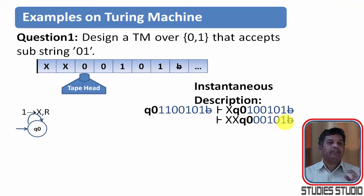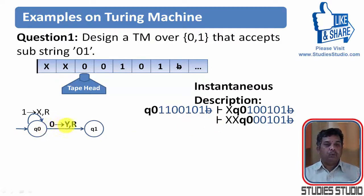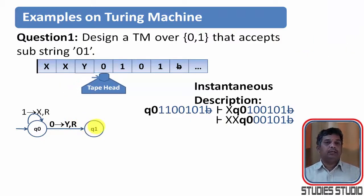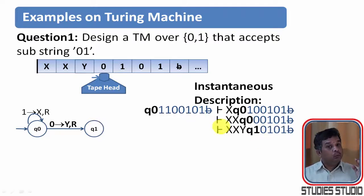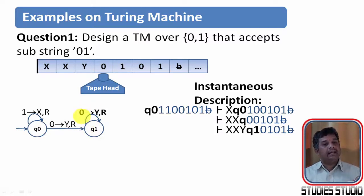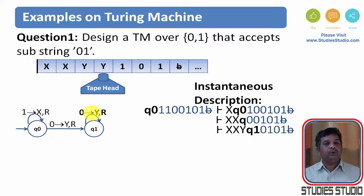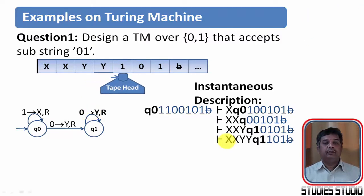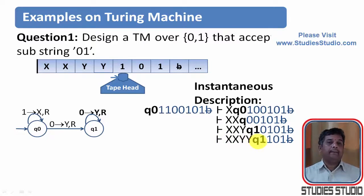After the first 0 appeared, in place of 0 we will write y and move right. So we have written y in place of 0 and moved to the right. The instantaneous description will be: xxy, q1, 0, 1, 0, 1. The next input symbol we are having is 0. When one more 0 appears, we stay in q1 and move right, writing y in place of 0. The instantaneous description will be: xxyy, q1, 1, 0, 1.